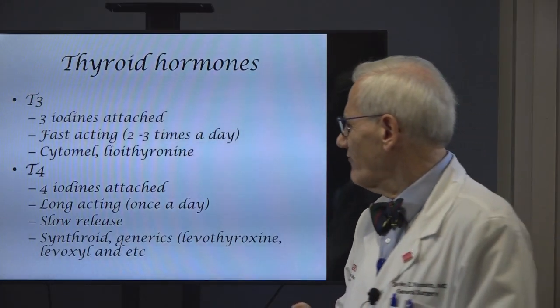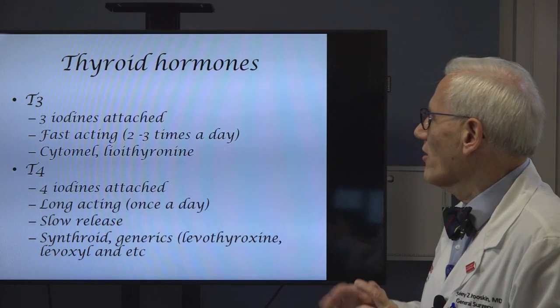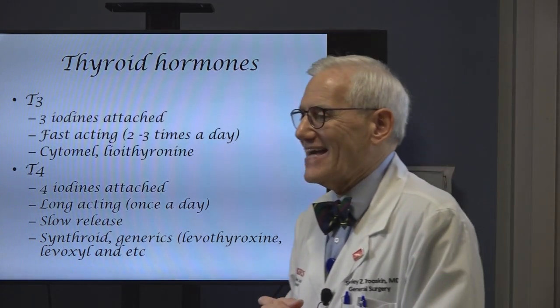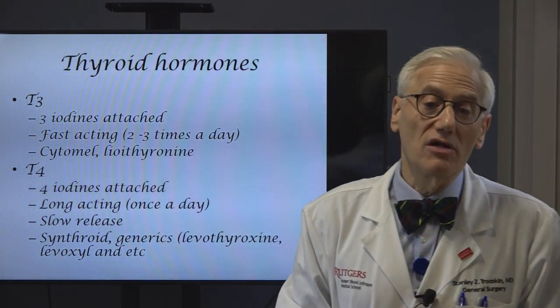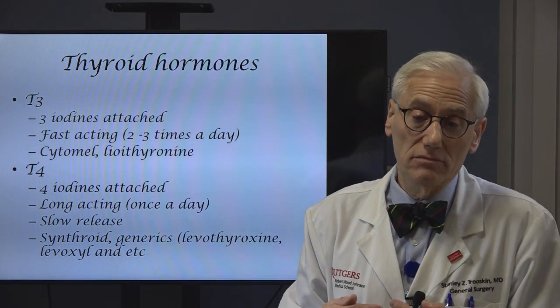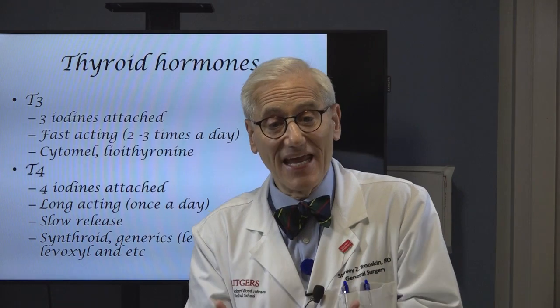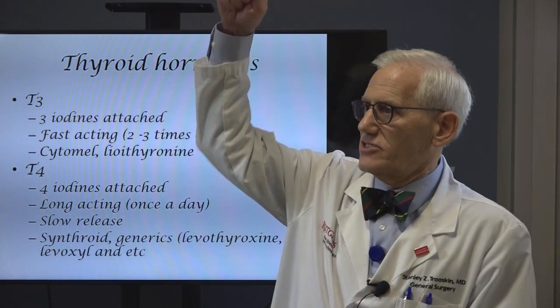Once the chemical structure of T3 and T4 was figured out, it was easy for scientists to make it in the lab — synthetic thyroid. T3 is the active hormone. There are only a few brands: Cytomel and liothyronine. The problem with taking T3 is that it's very fast acting and doesn't hang around in the blood long. If you took it in the morning, a couple hours later you have a lot of energy, then a couple hours after that you'd be tired again, and your energy level would be up and down.